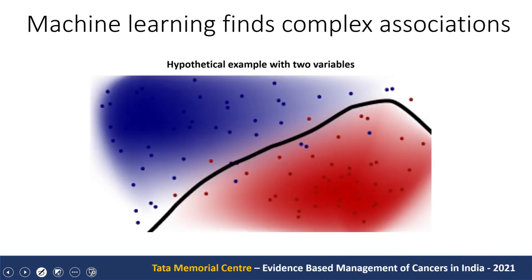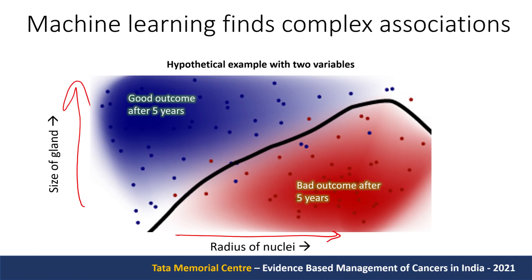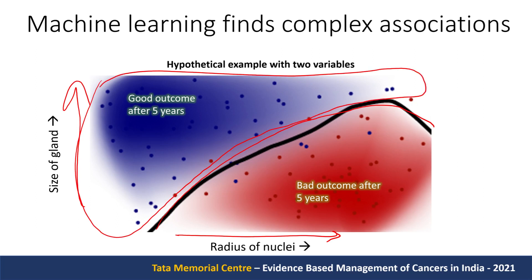Machine learning tries to find complex associations. Here is a hypothetical example from pathology: if we have two variables — radius of nuclei and size of the gland — the model tries to find decision boundaries between good outcome and bad outcome in five years. So it can be predictive of future outcomes once we can extract this data.